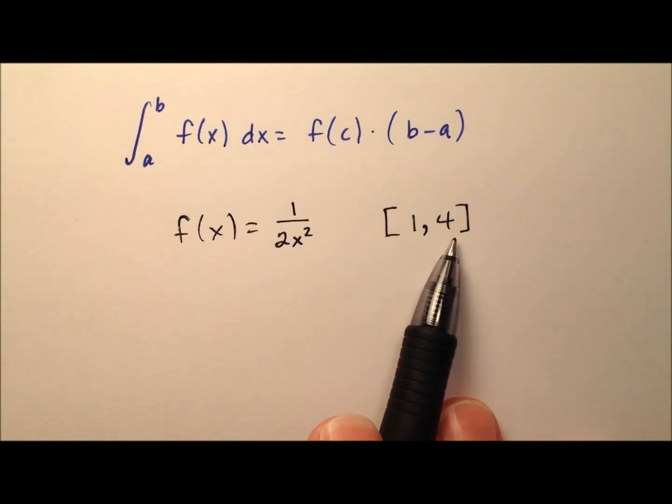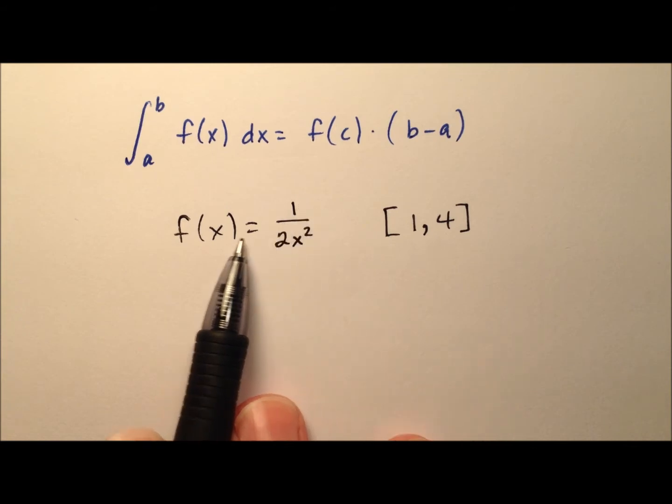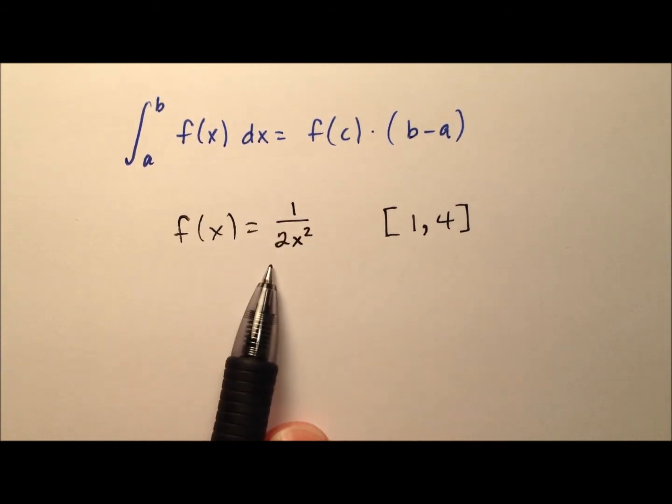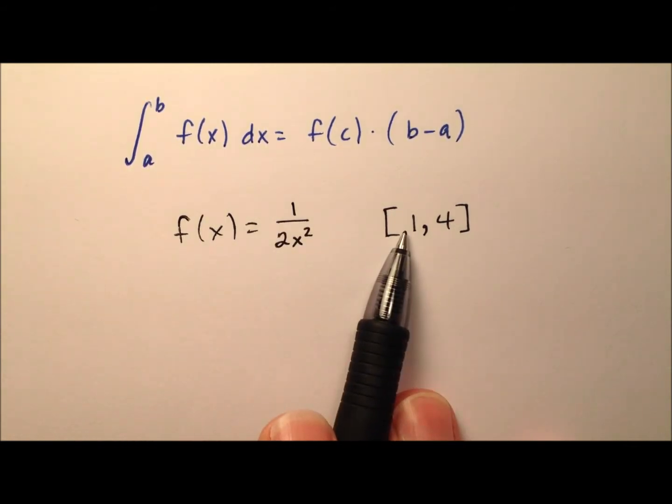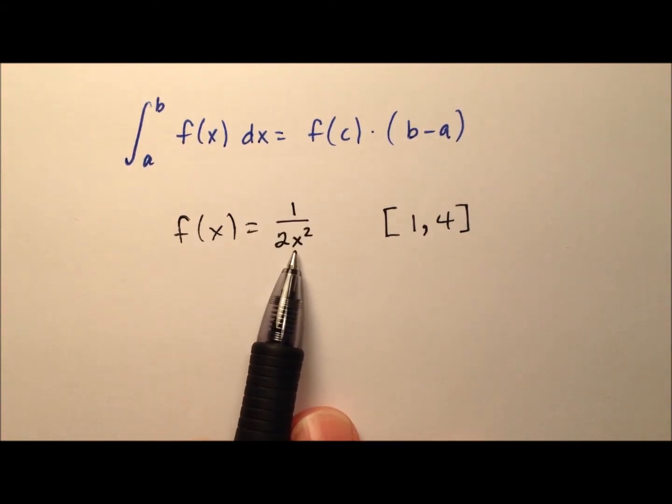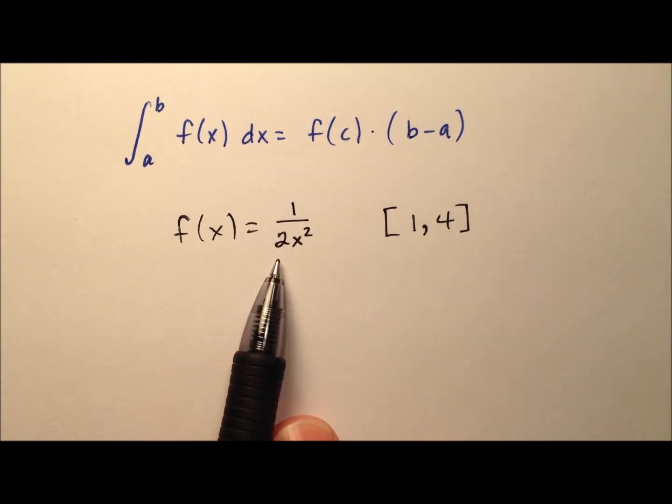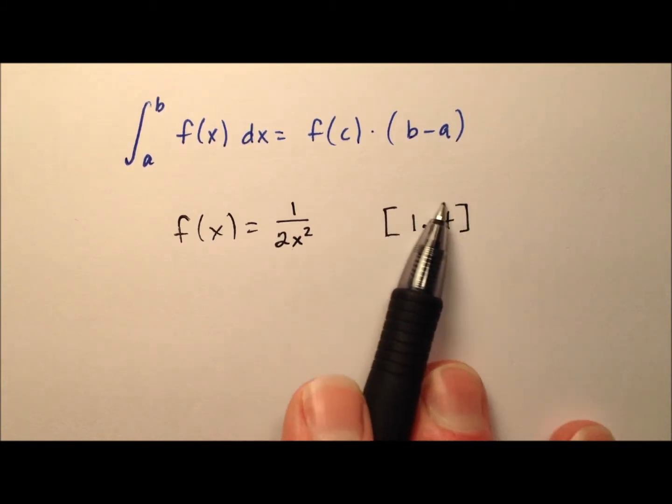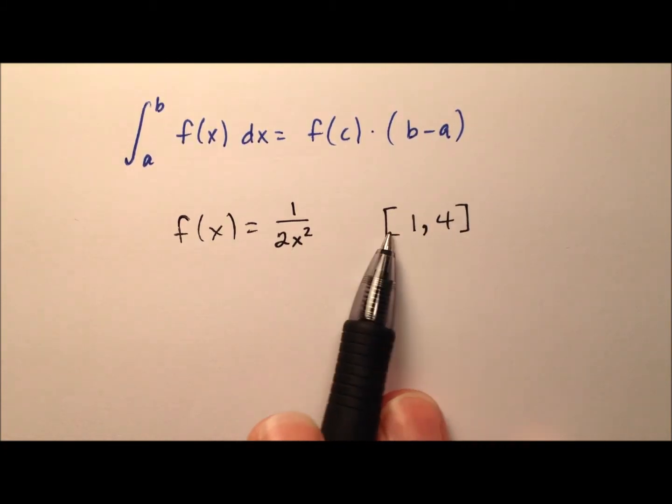So the prerequisite we need to check out first is this needs to be continuous over this entire region. Your function here, 1 over 2x squared, the only time that's not going to be continuous is when x equals 0, and that will be in the form of a vertical asymptote for that discontinuity. But x equals 0 is not in this region, so we are good to go.